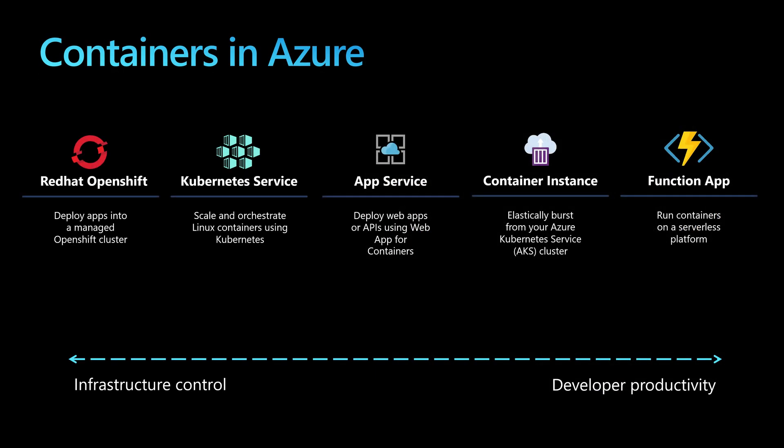These services have one common objective: they can run containers in production. But they are different by design. On the left side, we'll find the services that will give you more infrastructure control — you will manage that infrastructure yourself — like using the Azure Red Hat OpenShift or the Azure Kubernetes Service, AKS Clusters.